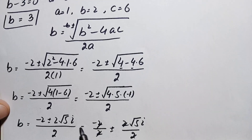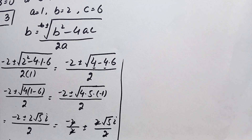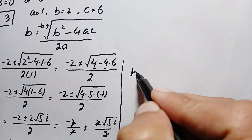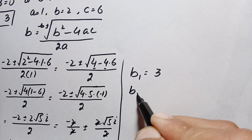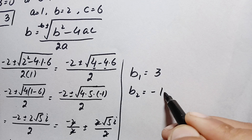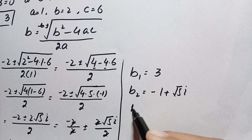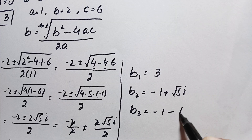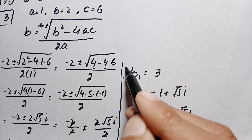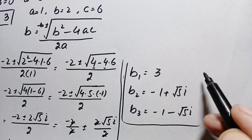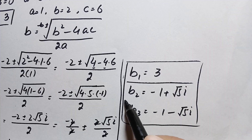We have two complex values of b. Finally, there are three possible solutions: b1 equals 3 (real), b2 equals negative 1 plus square root of 5 times i (complex), and b3 equals negative 1 minus square root of 5 times i (complex). So we have three possible solutions to this interesting algebra math problem — one real and two complex.